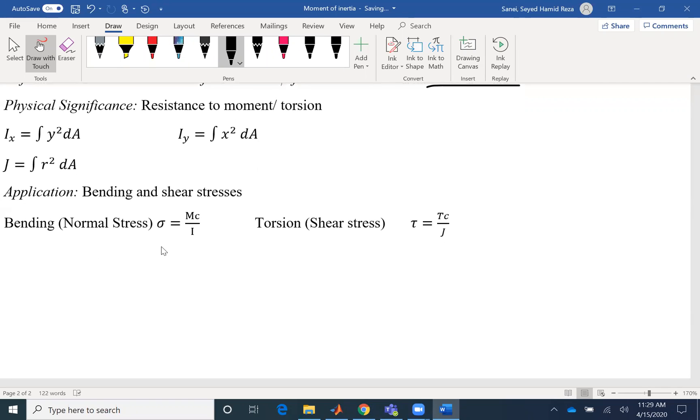And the application is in bending equation, M over I equals sigma over C, or in torsional equation, T over J equals tau over C. And for different geometries, we have different I's.